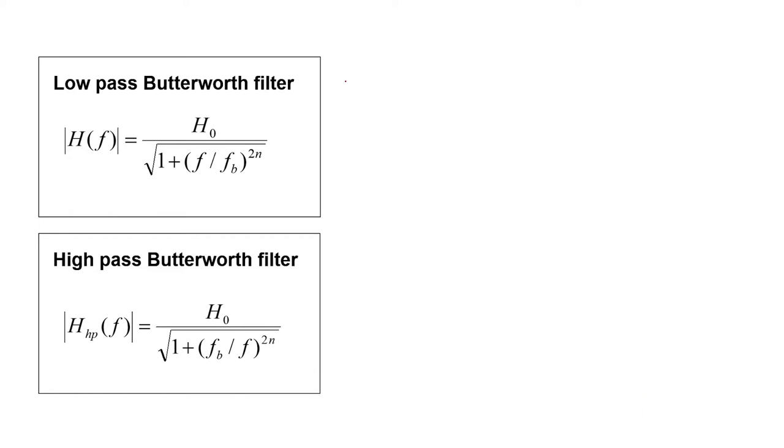First, let's start with the low-pass Butterworth filter, and let's see what happens to the transfer function as the frequency gets smaller and smaller. As the frequency gets smaller, we can see that the magnitude of the transfer function approaches the DC gain H0. As the frequency approaches infinity, that is, as the frequency gets higher and higher, we can see that the magnitude of the transfer function approaches zero.